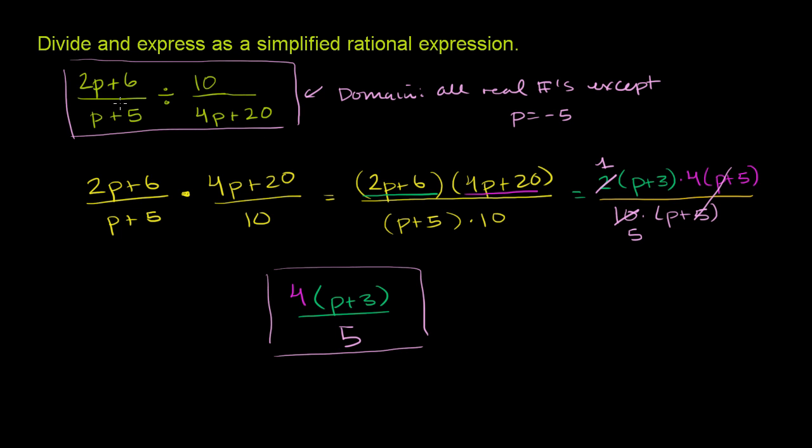Or another way to say it is you could put any value for p here, and you'll get a defined answer, except if p equals negative 5. Because then this is being divided by 0, and then this is being divided by 0. So if you really want this expression to be completely 100% identical to this expression, you have to put the same constraint. You could say not defined at p is equal to negative 5, which is another way of saying that the domain is not defined there. Or you could also write the domain here is all real numbers for p, except for p equals negative 5.